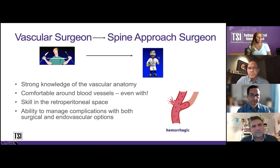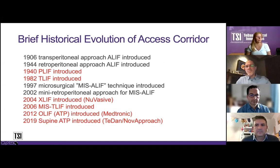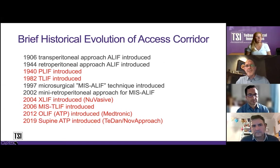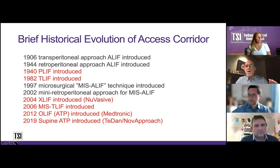A brief history: ALIFs have been around longer than any other approach. First came transabdominal, then retroperitoneal about 40 years later. Then T-lifts and P-lifts started coming around. The MIS-ALIF technique came around in the latter part of the 90s. Sal Brown really pushed it in early 2000s in Los Angeles. Then X-lift came around, and O-lift came around in 2012.